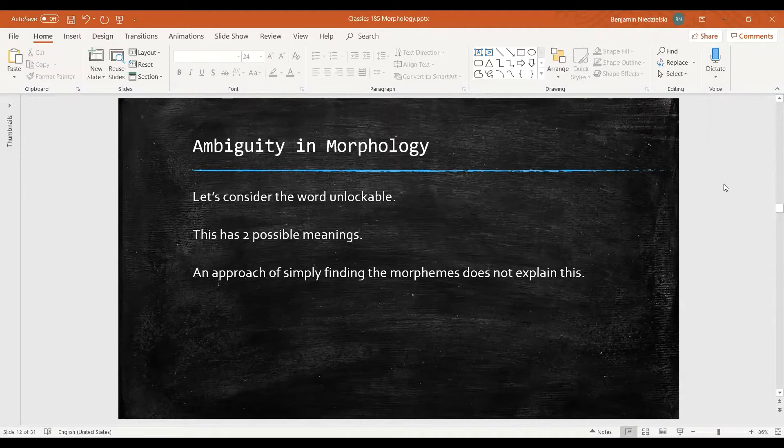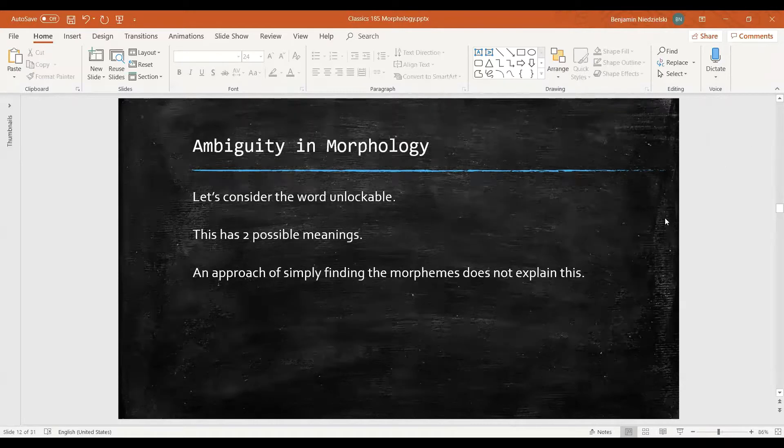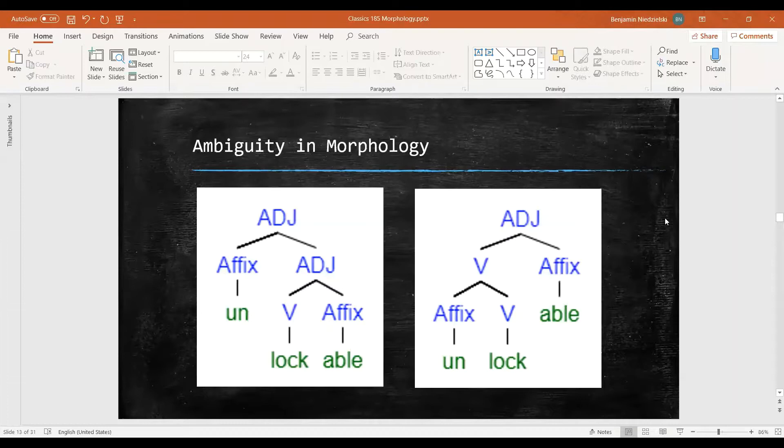An approach of simply dividing this into morphemes un, lock, and able does not explain the two different meanings. However, if we use a tree structure, we can at a glance see the different meanings. This first tree starts with the verb lock.